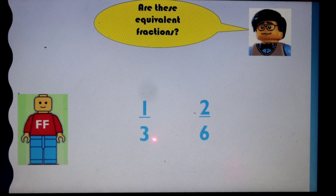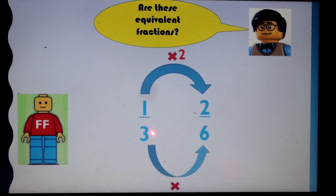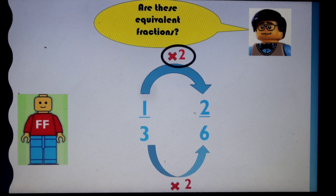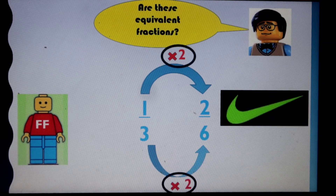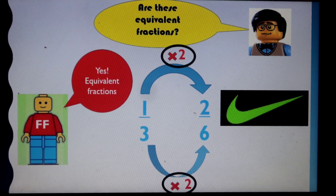We've got one third and two sixths. You can pause it now and then play it. So you should have done: what times one equals two — that should have been two. Go to the denominator: what times three equals six? That's two. We then circle. So they are equivalent fractions.